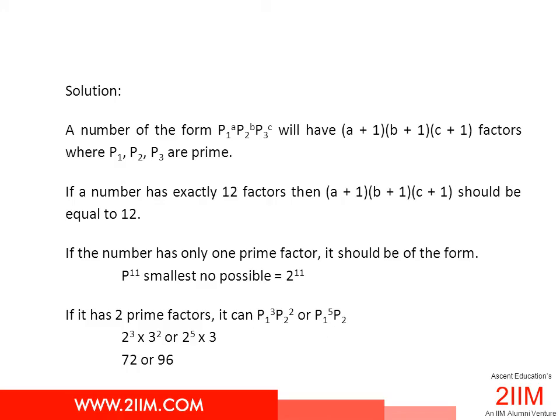First, let's look at the formula for finding the number of factors for a given number. If a number can be broken down into p₁^a × p₂^b × p₃^c, this will have exactly (a+1)(b+1)(c+1) factors, where p₁, p₂, p₃ are prime. So once you prime factorize the number, we can find how many factors are there for that particular number.